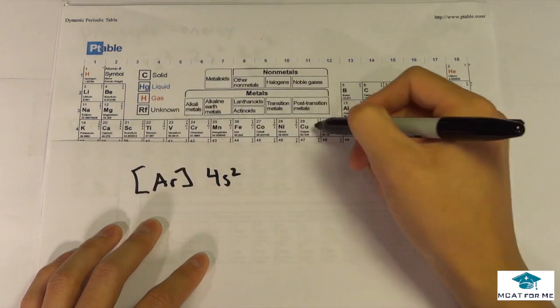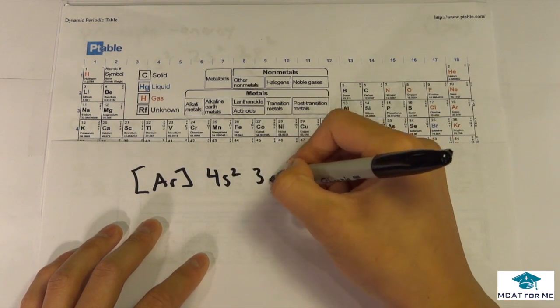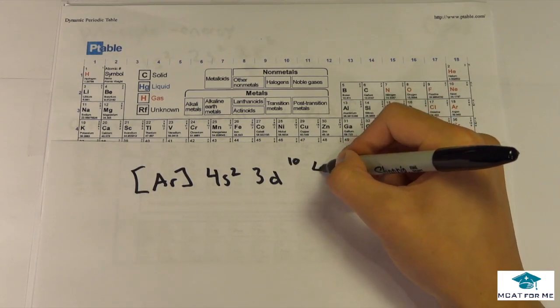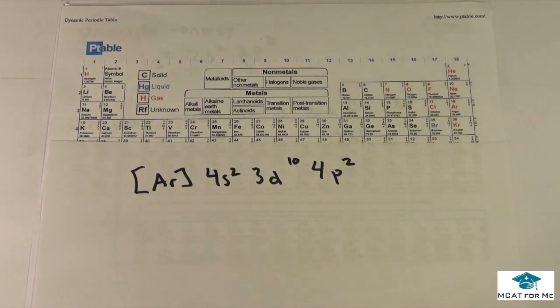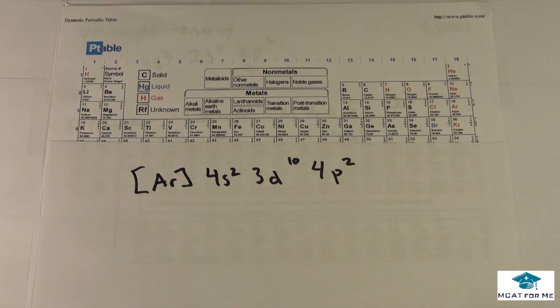And now what would this be? Would this be 4d, or would it be 3d? Well, we know it's 3d10, because of what we said before. And this would be 4p2. Remember only the D block is what shifts down one number. The S and the P still stay the same.